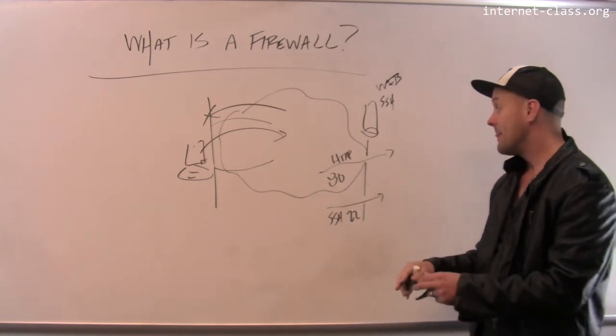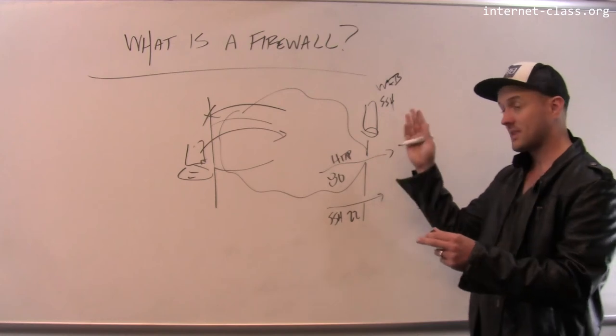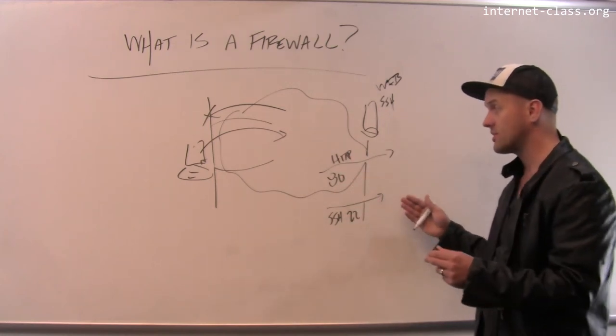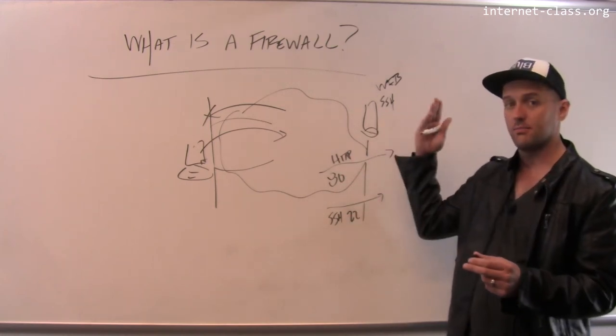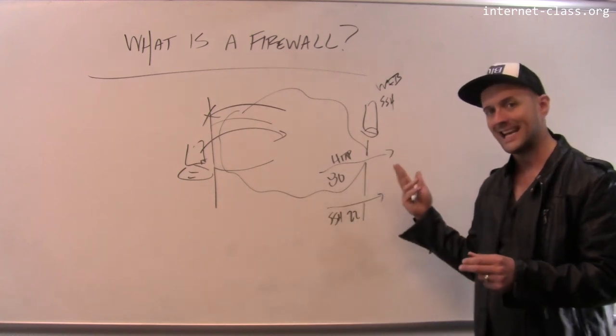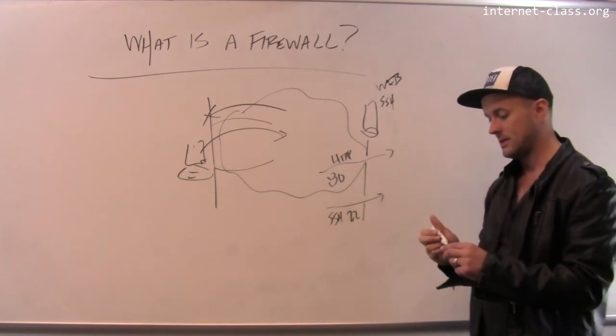In this case the firewall is configured to only allow certain types of connections. So if somebody gains access to the machine and installs malicious software running on some other port, nobody will be able to connect to it.